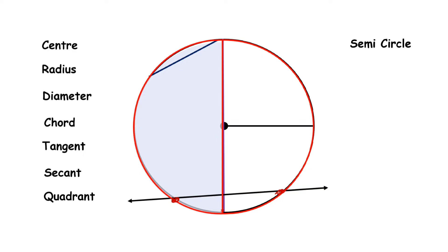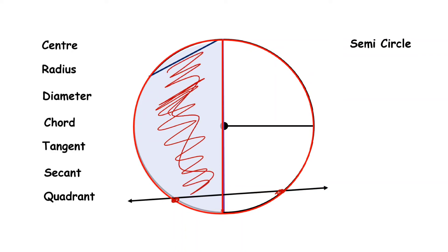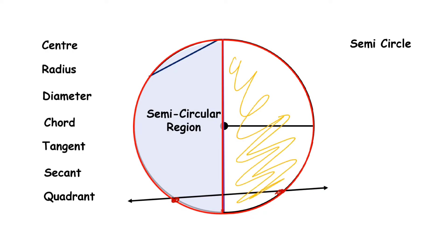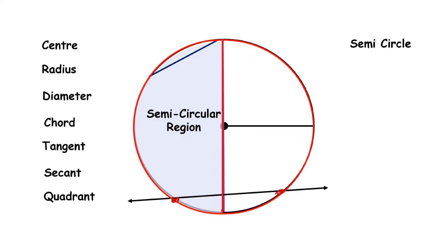Now you can see this shaded part in this figure. This shaded part is called a semi-circular region. You can also see the other part — that part is also known as a semi-circular region.